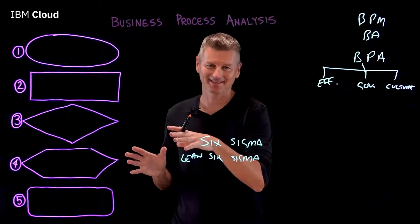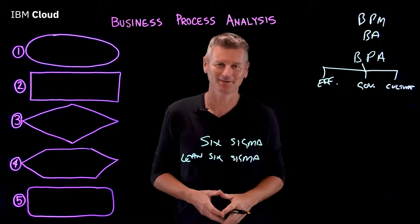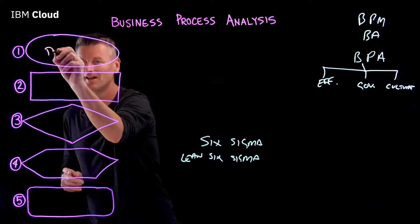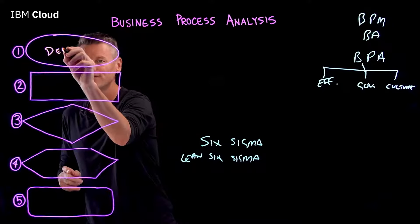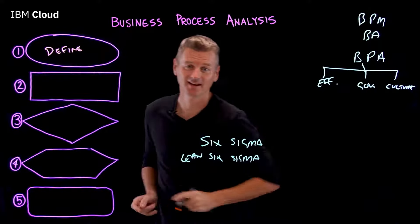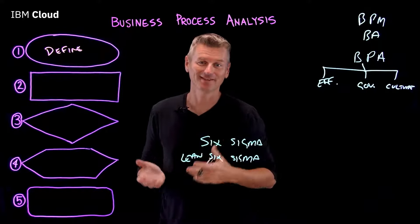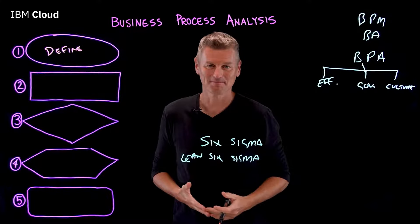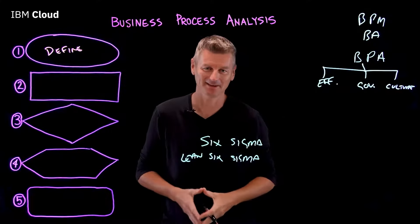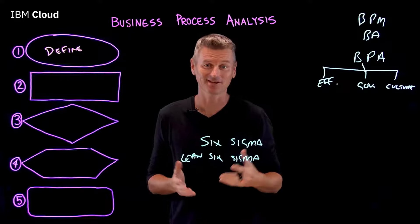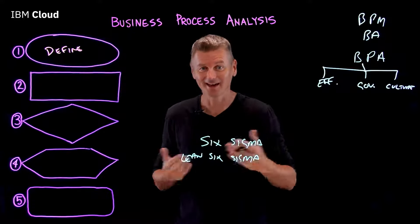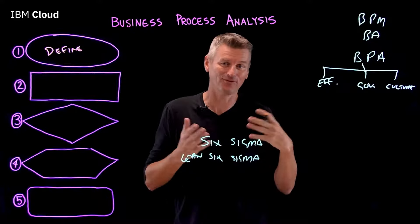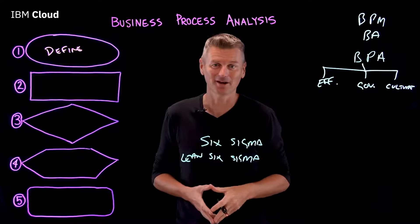Let's get to that five-step process for BPA. Step number one is Define — defining the process you want to analyze. Analysts begin with as-is processes, which is to say how things work today. That could be a formalized, documented process or otherwise.